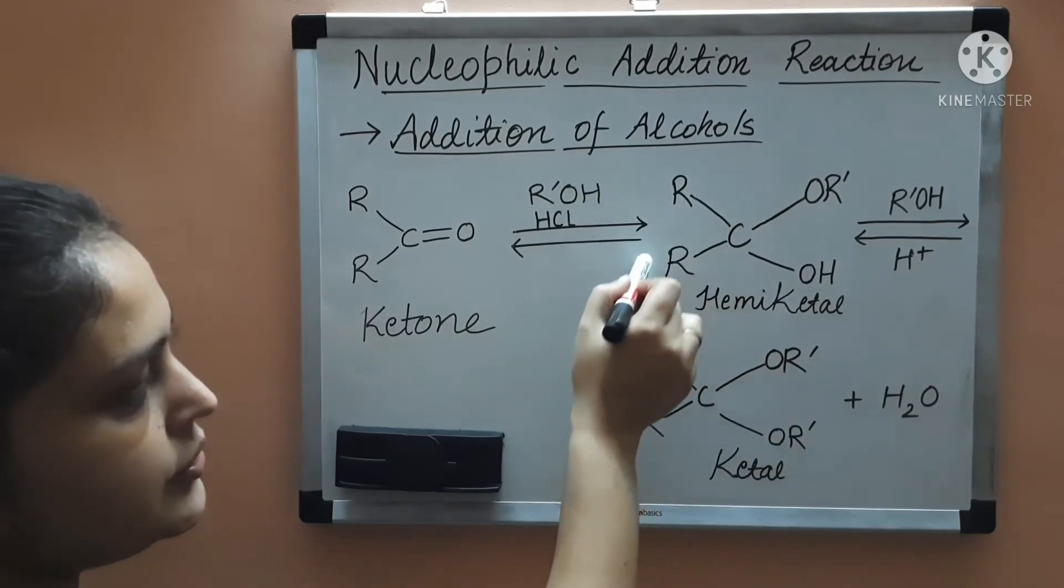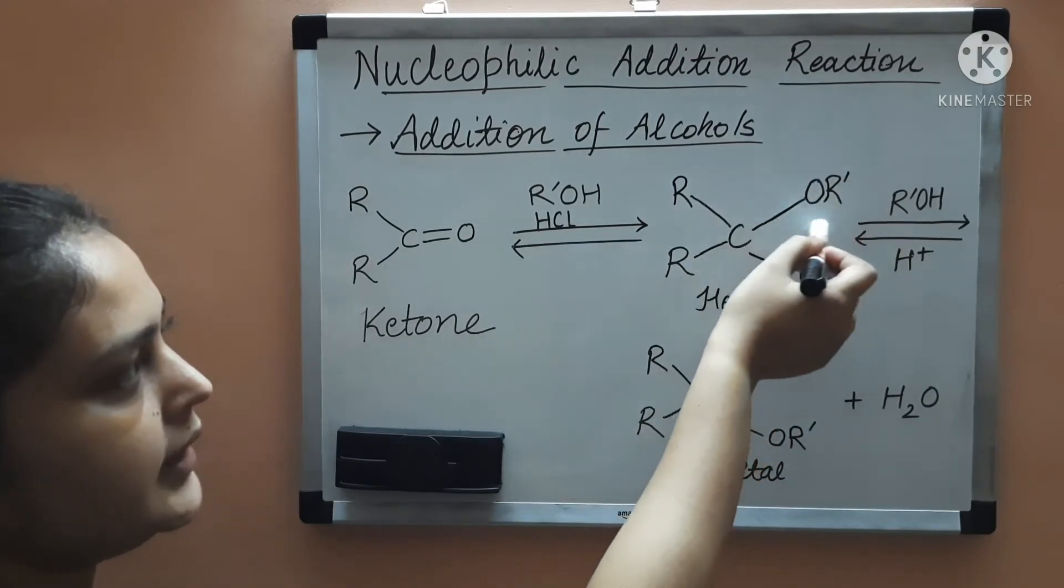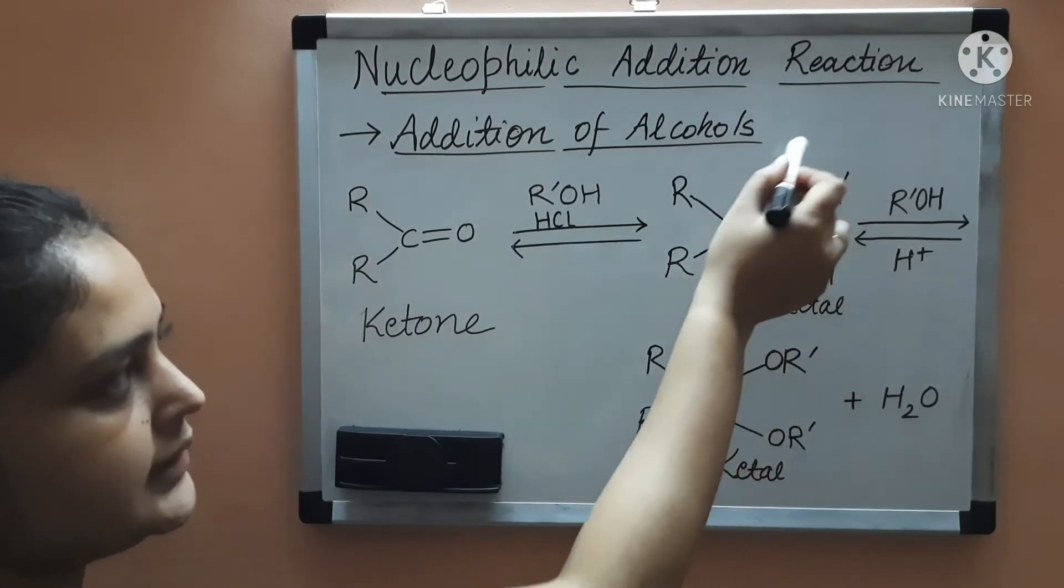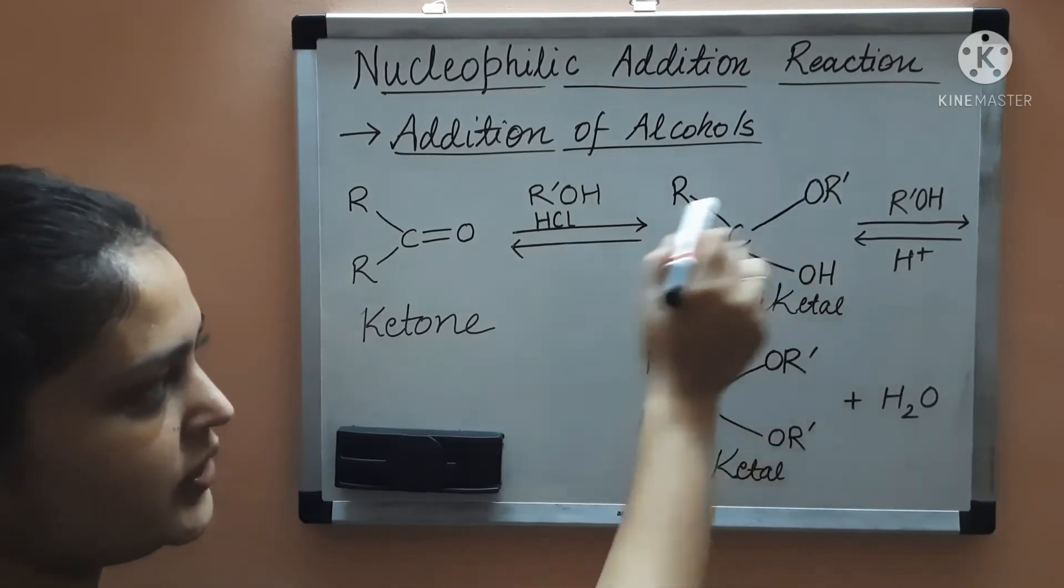Here instead of hydrogen atom you have the alkyl group and rest is same. This is alkoxy alcohol because there is one alkoxy group OR' and one alcohol group that is OH.